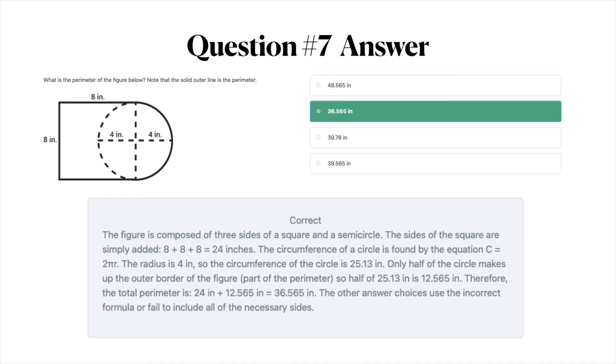Only half of the circle makes up the outer border of the figure, which is part of the perimeter. So half of 25.13 is 12.565 inches. Therefore, the total perimeter is 24 inches plus 12.565 inches equals 36.565 inches. The other answer choices use the incorrect formula or fail to include all of the necessary sides.